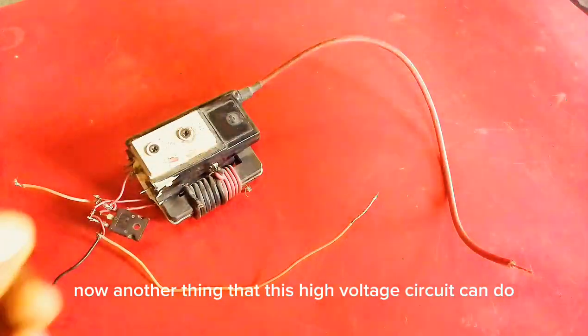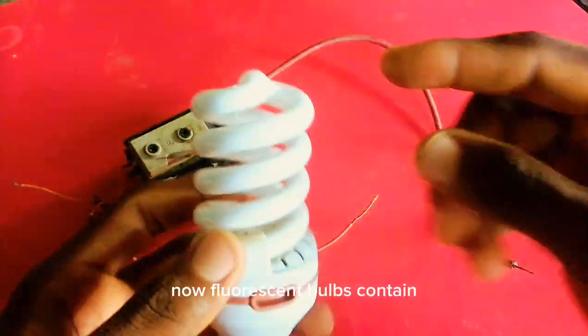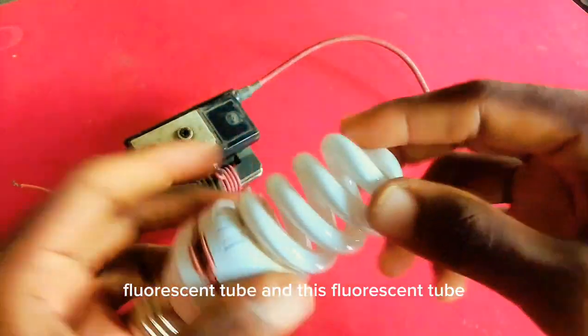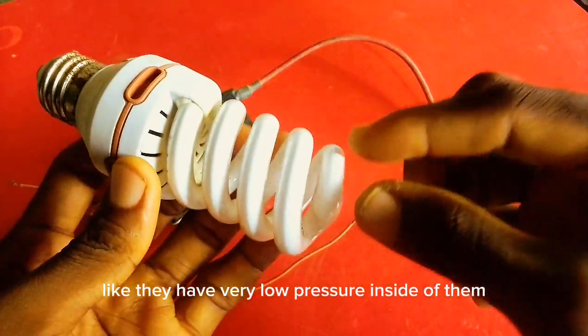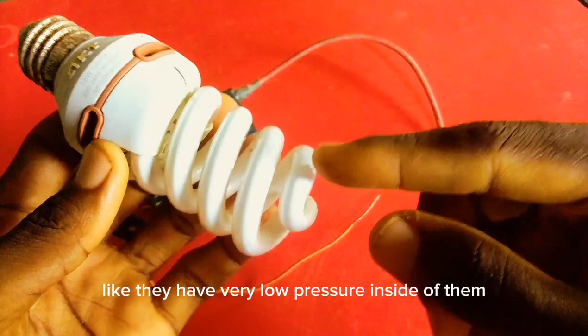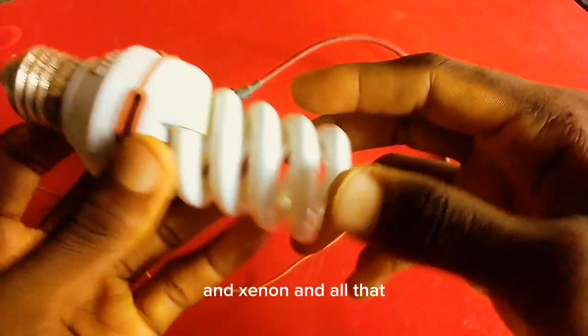Now another thing that this high voltage circuit can do is to light up a fluorescent bulb. A fluorescent bulb contains fluorescent tubes and these fluorescent tubes are low pressure tubes with very low pressure inside of them with some kind of inert gases such as neon and xenon.